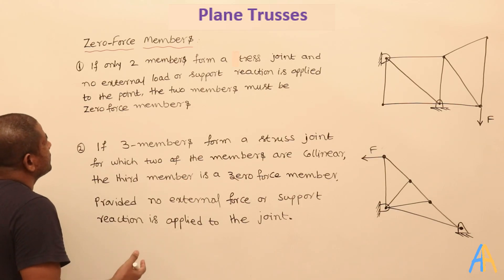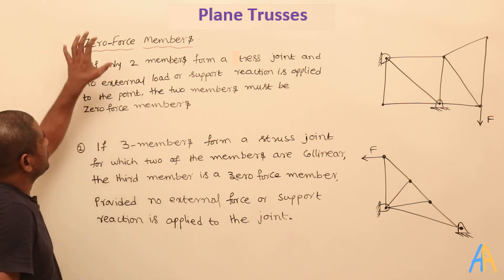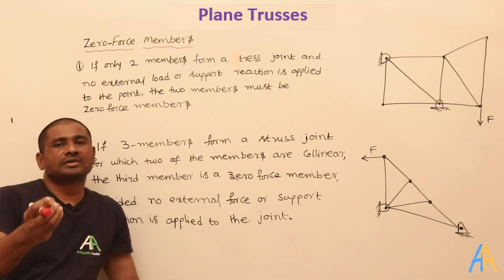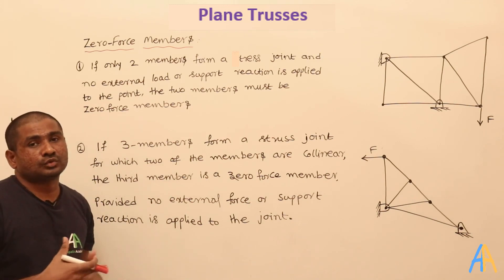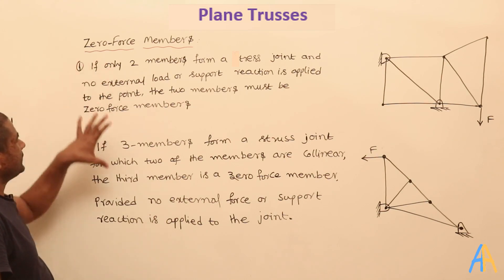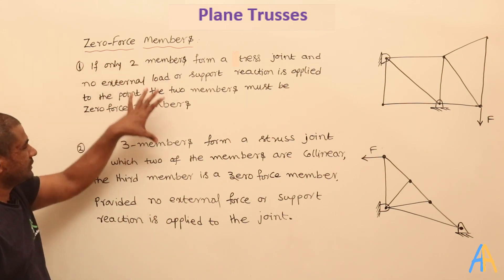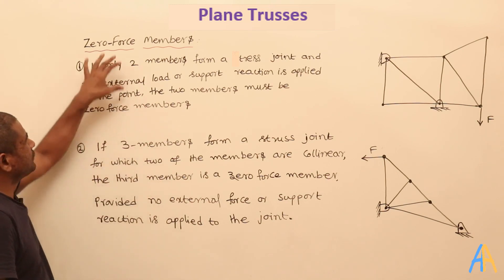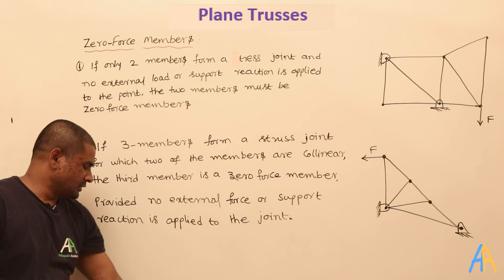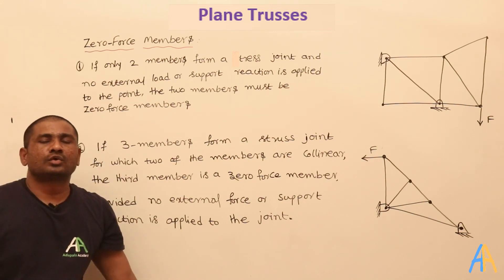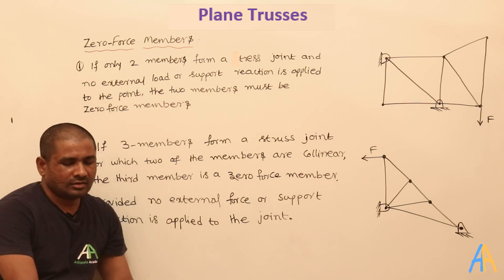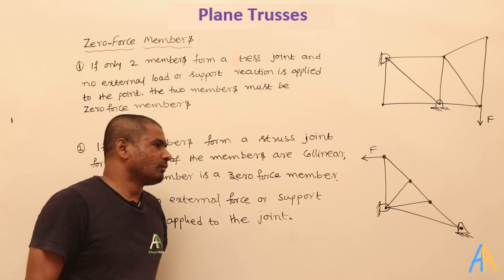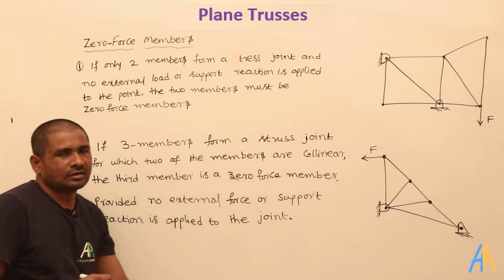An important topic is zero force members. In a structure, some members are not subjected to any forces at all. There are two conditions, and whichever members satisfy these two conditions are not subjected to any force. This is an important concept because, if you observe previous year questions, most problems are given in such a way that they have zero force members. Once you know this, you can simply look at the problem and write the answer.